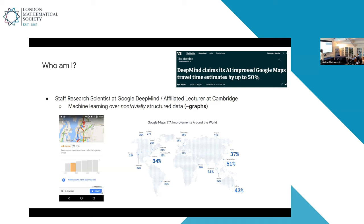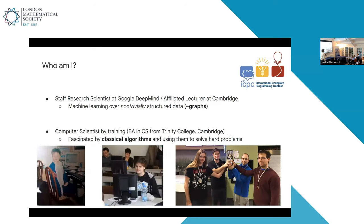At the time of launch, we improved Google's previous production baseline by up to 50% in some cities such as Sydney and Taichung. Besides the machine learning background, I also have a computer science background. I did my undergraduate degree in theoretical computer science at the University of Cambridge, and I've basically been fascinated by classical computation.